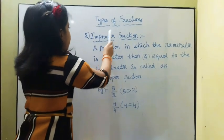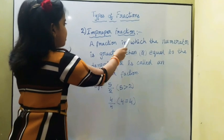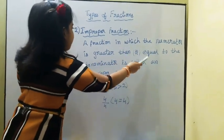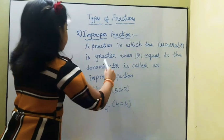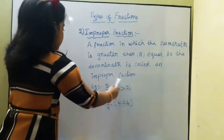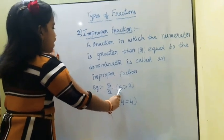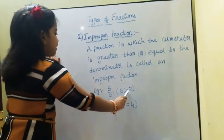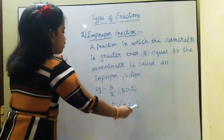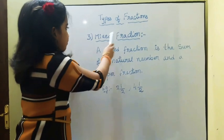The second type is improper fraction. A fraction in which the numerator is greater than or equal to the denominator is called an improper fraction. For example: 5 upon 2, where 5 is greater than 2; and 4 upon 4, where 4 is equal to 4.